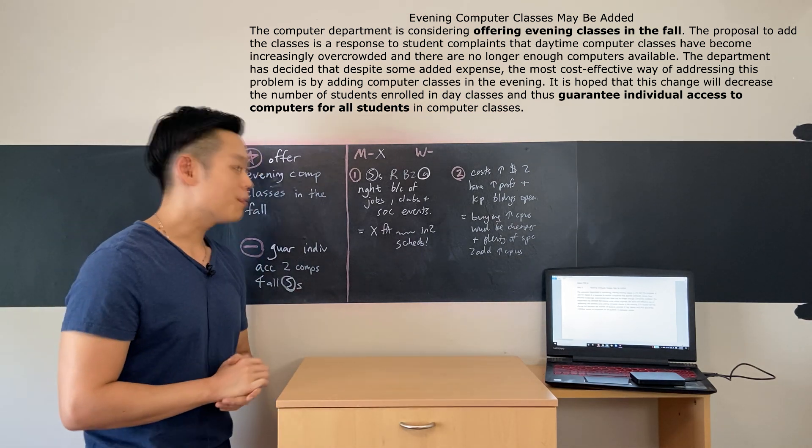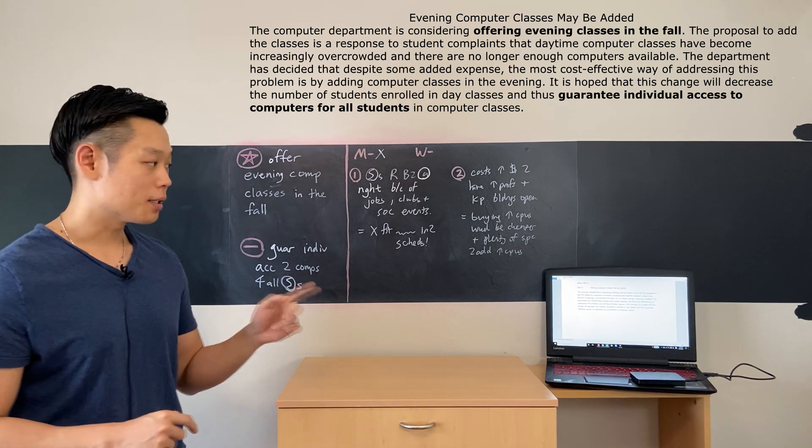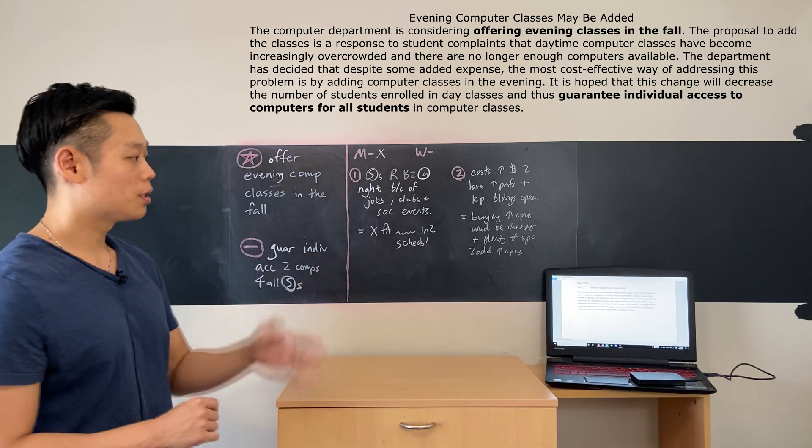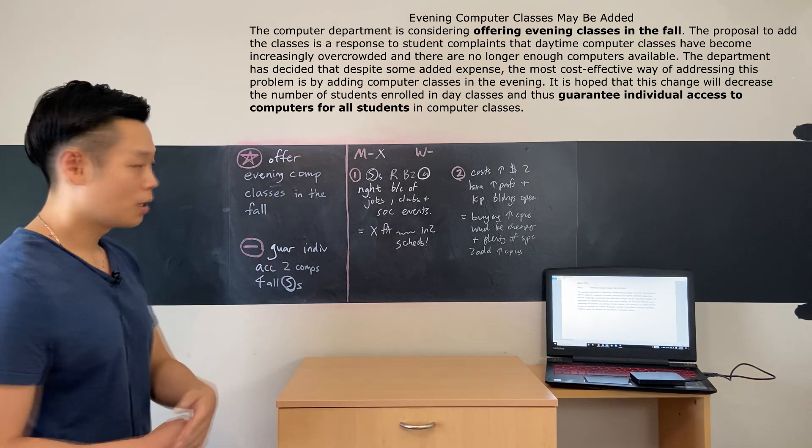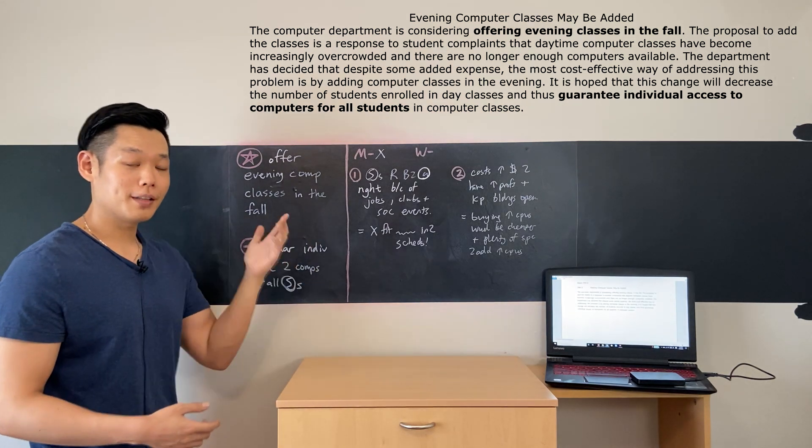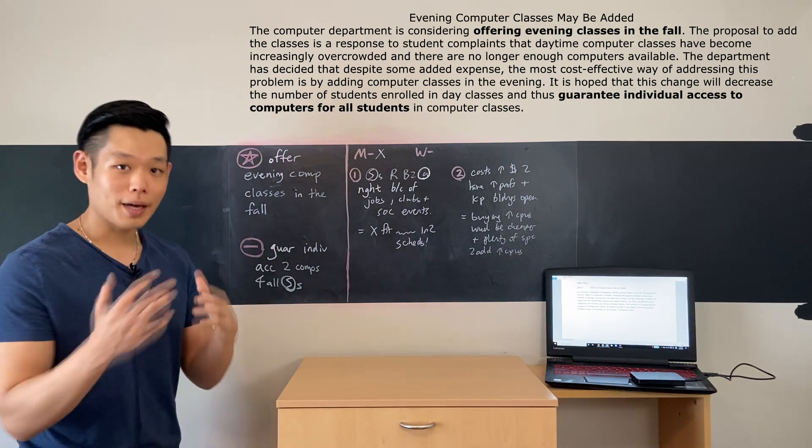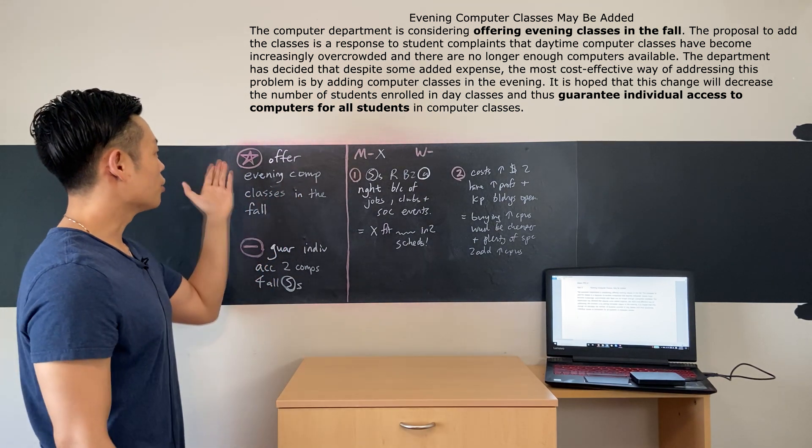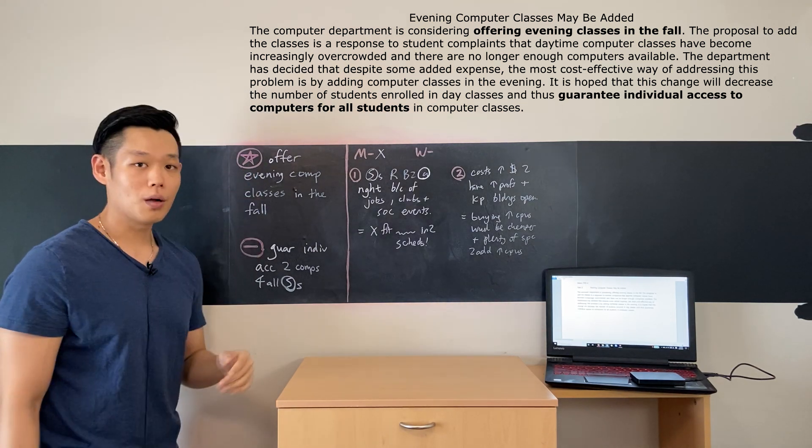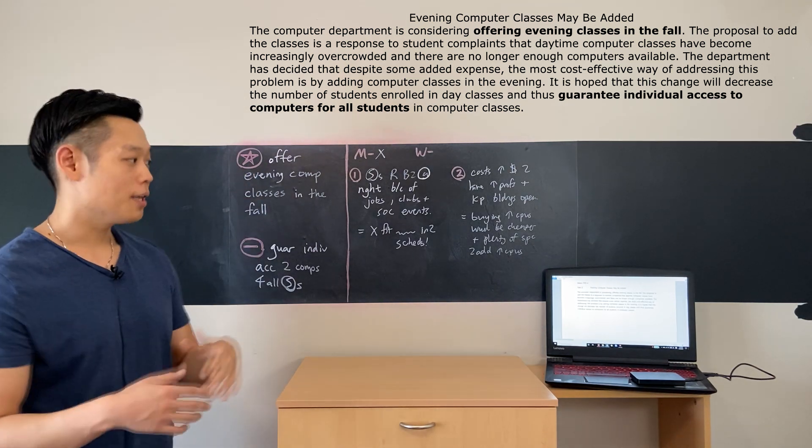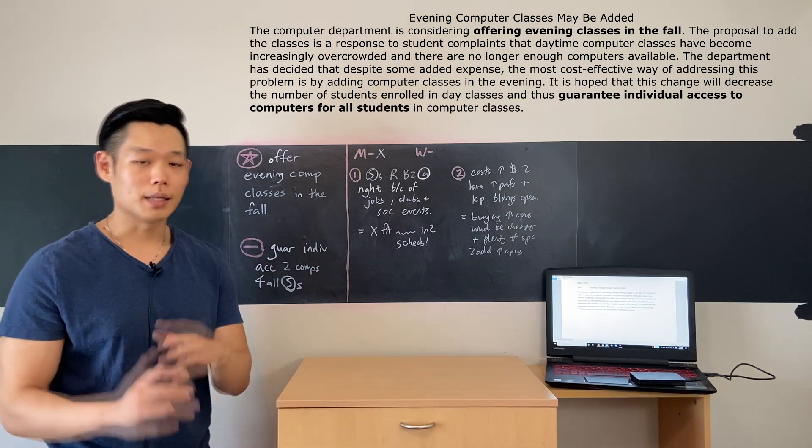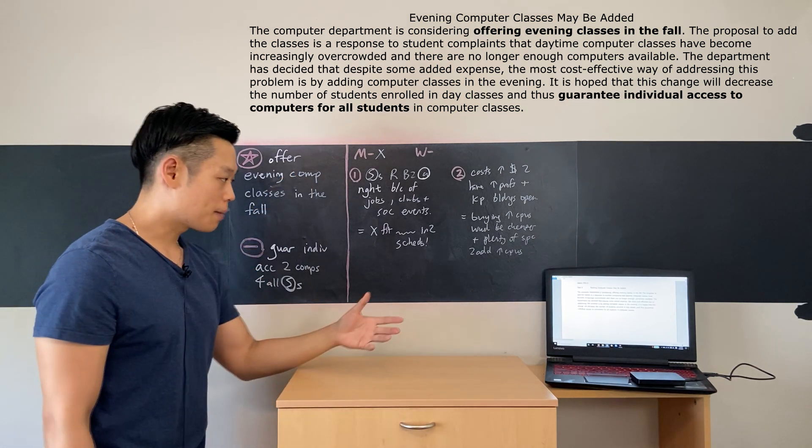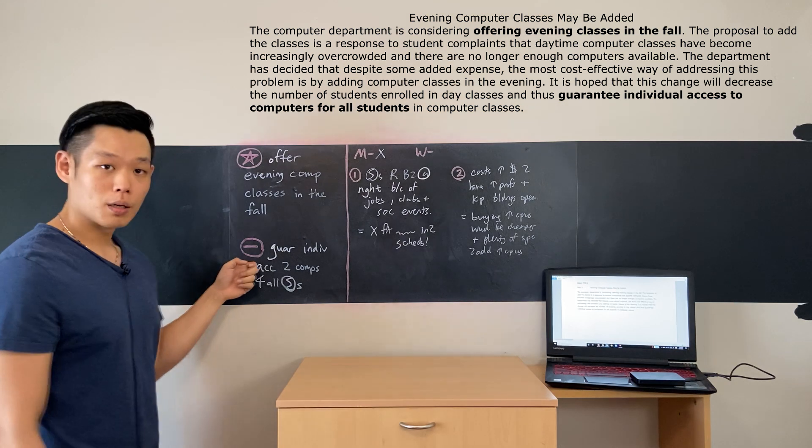Evening computer classes may be added—that's the title. The first sentence says the computer department is considering offering evening classes in the fall. So the beginning sentence should be 'offer evening classes in the fall,' but let's be careful and mention the word 'computer' so that we are specific. If you just say the university is planning to offer evening classes in the fall, then that would imply that any and all subjects are now available at night, but that's not true. It's just the computer classes, so make sure you add this.